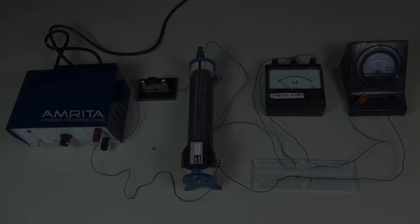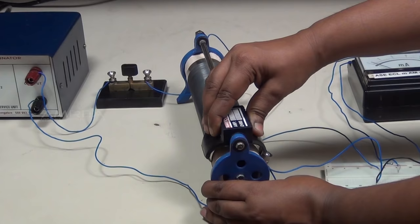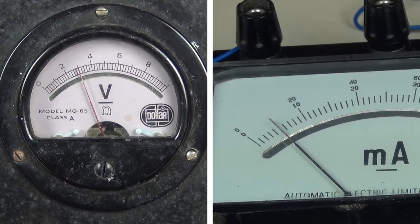Connections are made as shown in the circuit diagram. Insert the key. By adjusting the rheostat, the voltmeter reading is increased from zero and each time note the corresponding reading in the milliammeter.